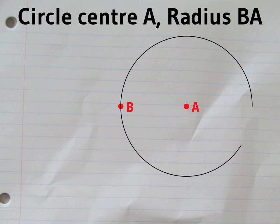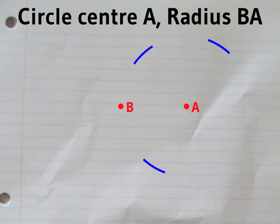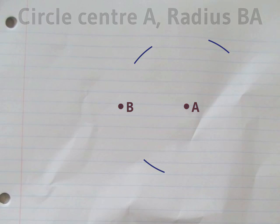Draw a circle centered on A with radius AB. Remember especially to draw these three arcs, which we'll need later.